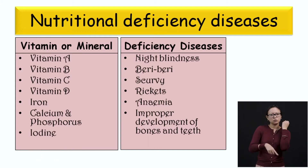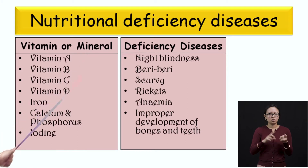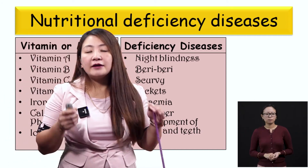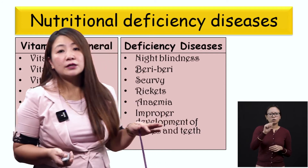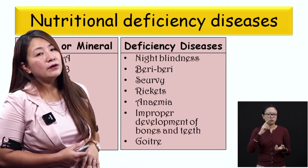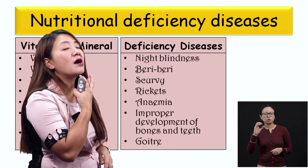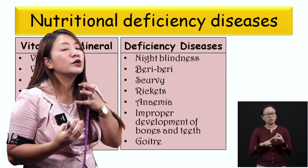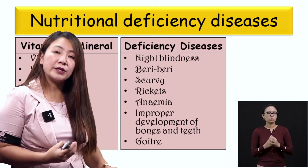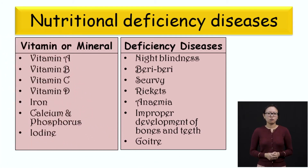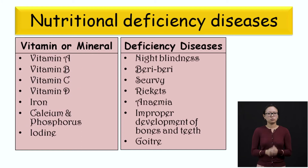Last, we have iodine — also a mineral, found in common salt that we eat. If your food does not contain iodine, it causes a disease called goiter, where your thyroid glands are enlarged — your neck becomes enlarged. These are some of the nutritional deficiency diseases.